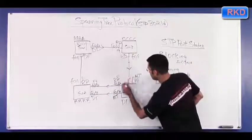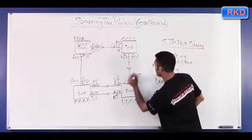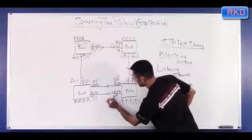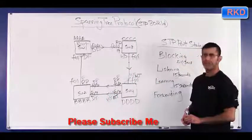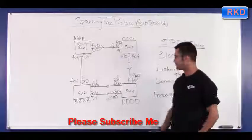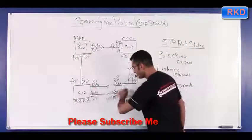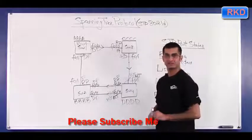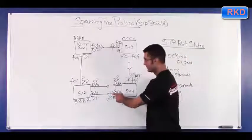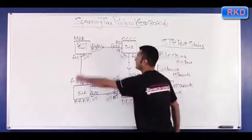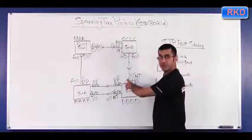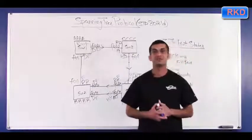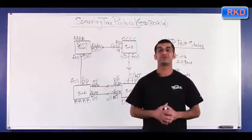So, this link is shut down. So have we, at this point, stopped the loop? Can I have a loop this way now? No, I can't, because this port is blocking. Can I have a loop this way, or this way? No, because this port is blocking. And that concludes the spanning tree decision making process and spanning tree convergence.